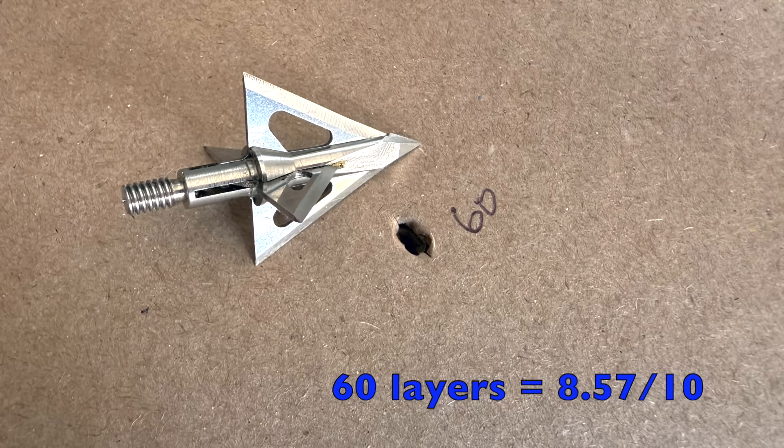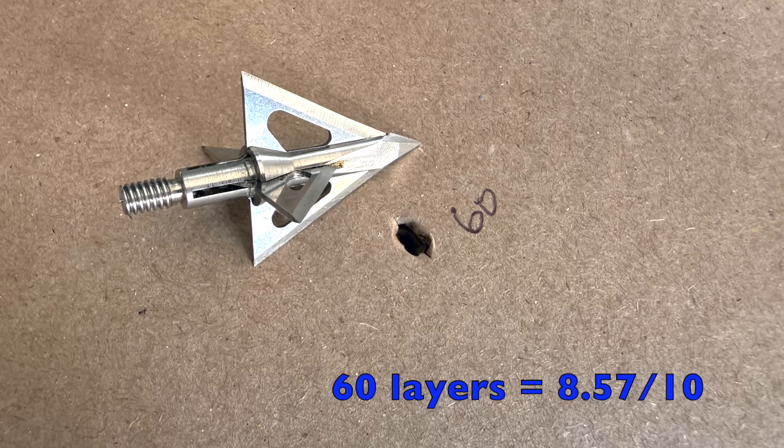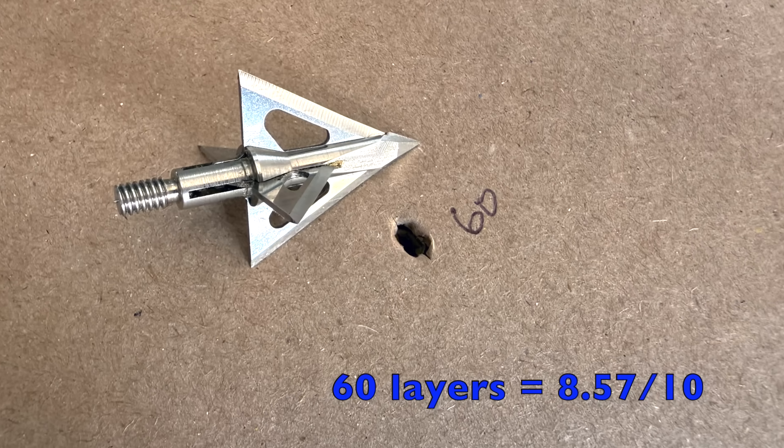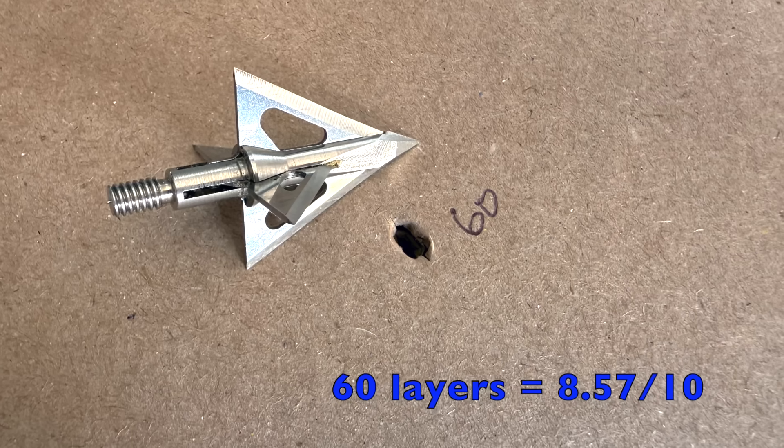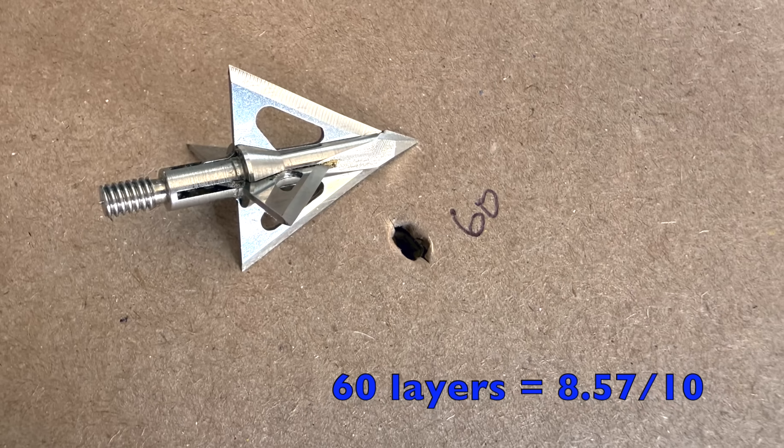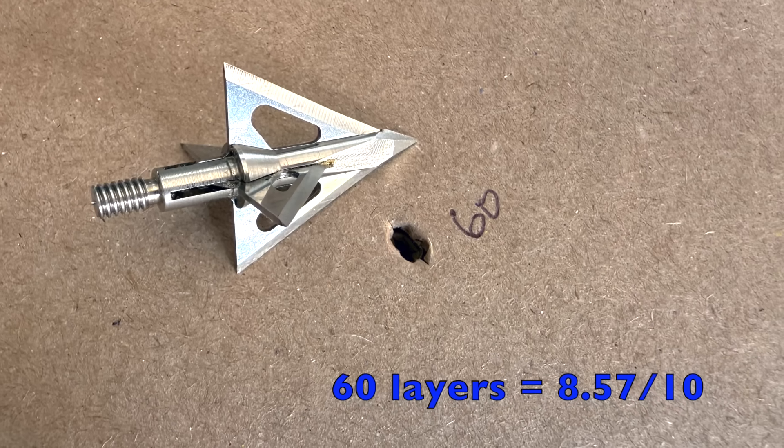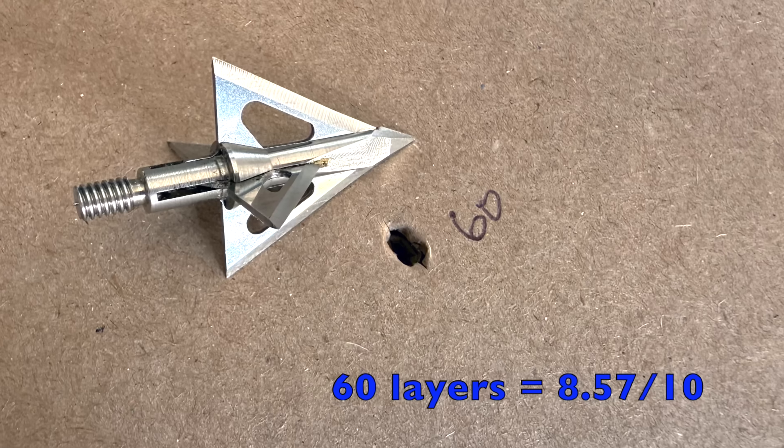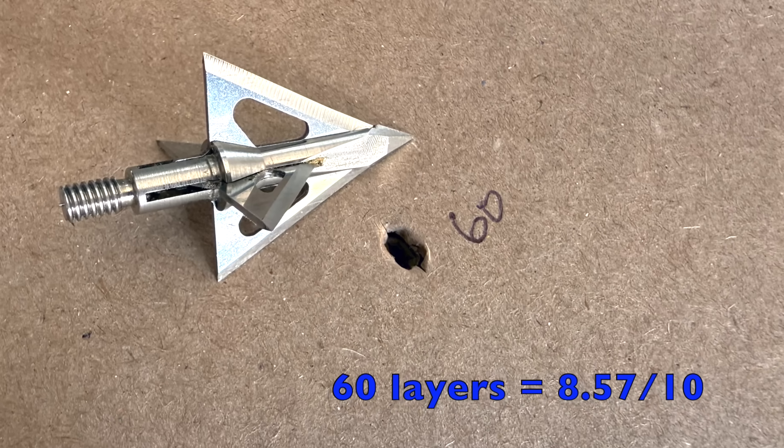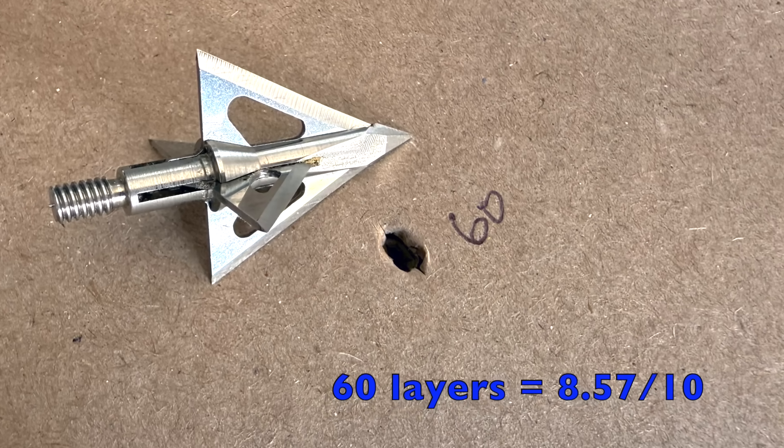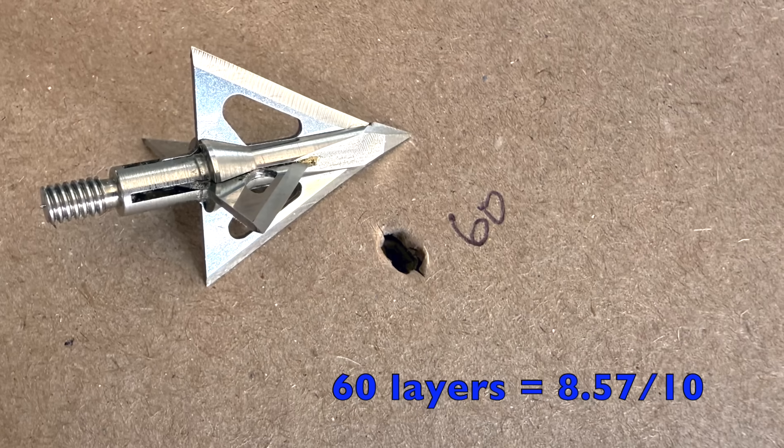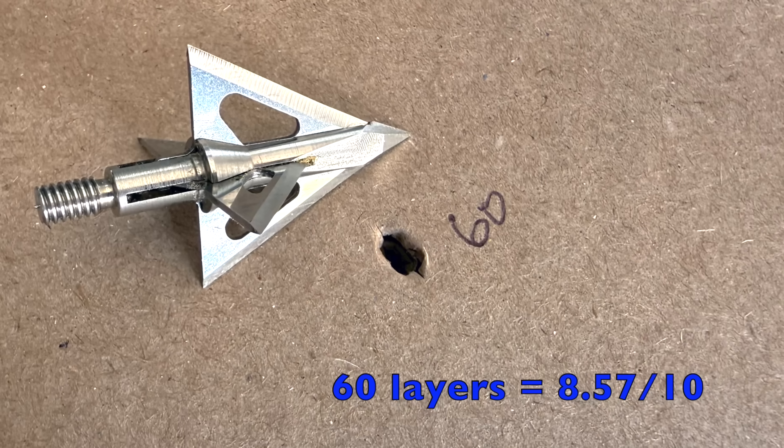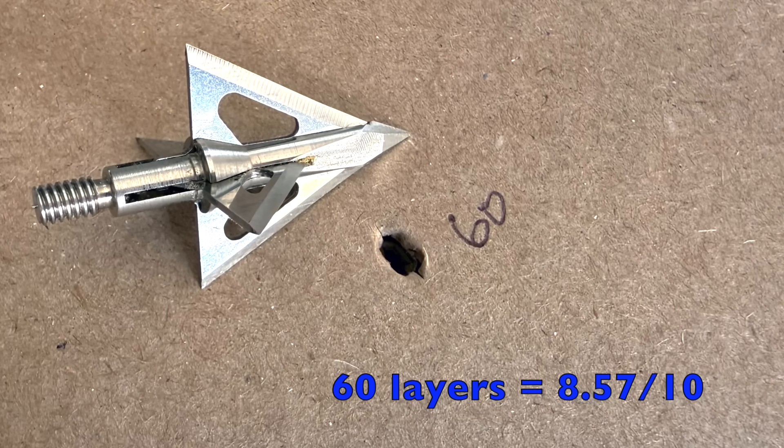It penetrated through 60 layers, which is an 8.57 on a 10-point scale. But let me tell you, that's really impressive for such a big cut and for such a short-profile broadhead. It's different if a really long, narrow broadhead penetrated through that. But this is where, in this case, man, that full cut is passing through the vast majority of those layers. Really impressive penetration.